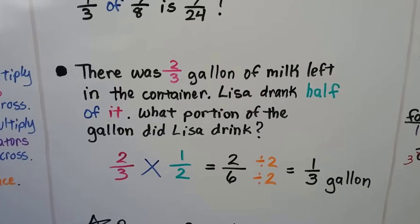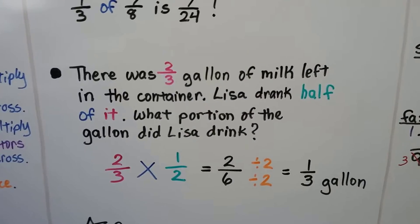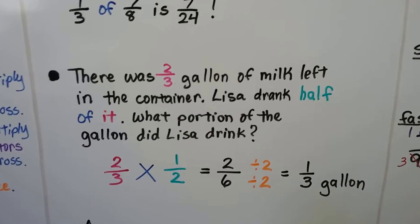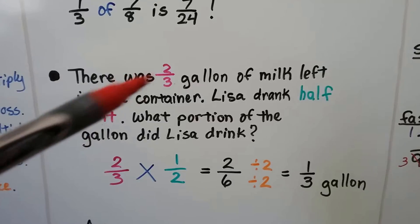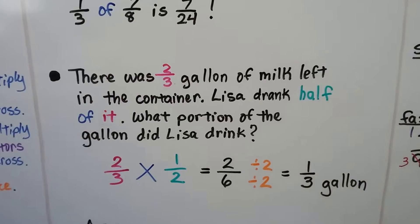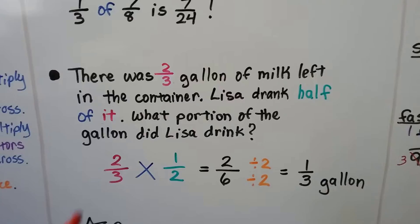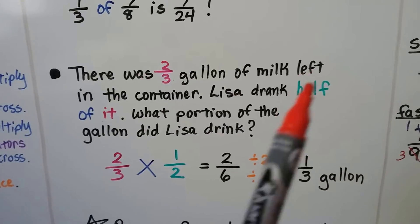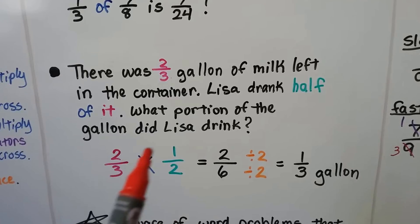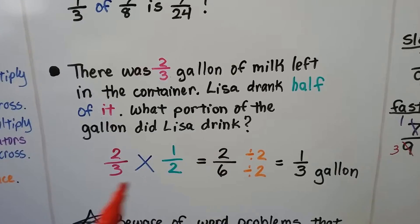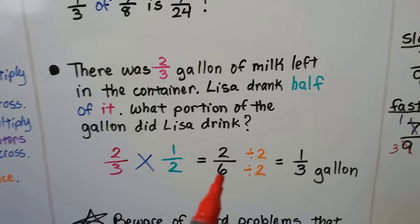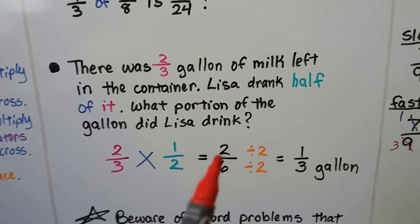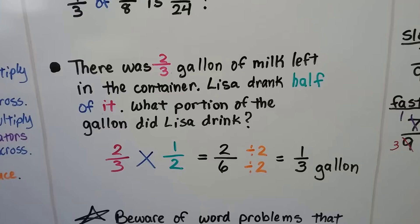There was 2/3 gallon of milk left in the container. Lisa drank half of it. So the 'it' is that 2/3 gallon. She drank half of the 2/3. What portion of the gallon did Lisa drink? We do the 2/3 times the 1/2. We do the 2 times 1 straight across and get a 2. We do the 3 times 2 straight across denominator and get a 6. This needs to be reduced. We can divide them both by a 2 and get a 1/3 gallon. So Lisa drank 1/3 of a gallon.